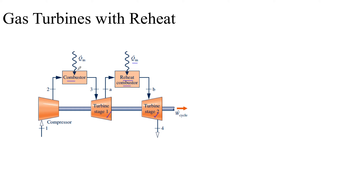The temperature of the gaseous combustion products entering the combustion chamber has to be limited for metallurgical reasons. The only way to control the temperature is by providing air in excess to burn the fuel. As a consequence, the gas exiting the combustion chamber will contain sufficient air to support combustion of additional fuel.